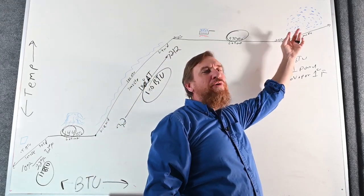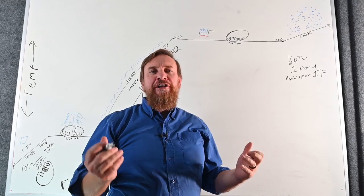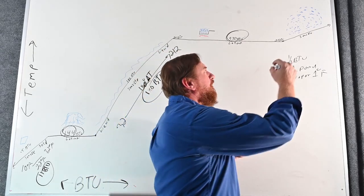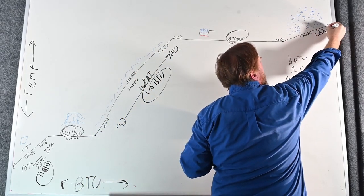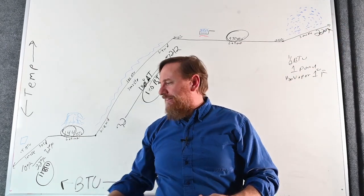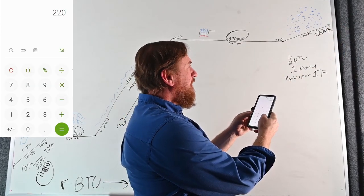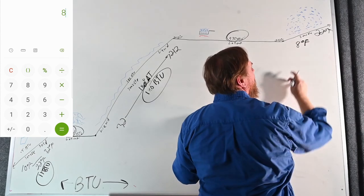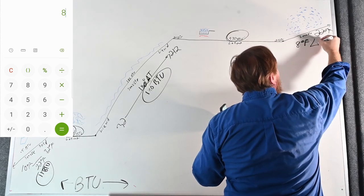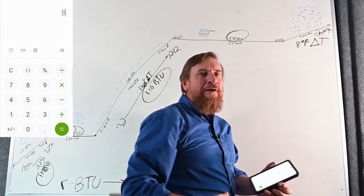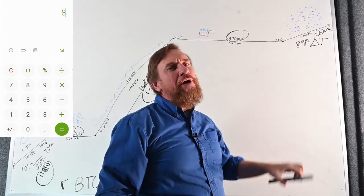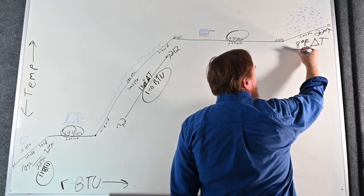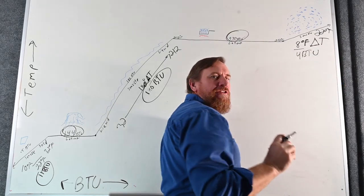Then we have one final step: taking it from 212°F vapor up to 220°F. We take 220 minus 212, which gives us an 8°F delta T. It only takes half a BTU to change one pound of vapor one degree Fahrenheit, so it's going to be half of 8, which is 4 BTUs to make that difference.